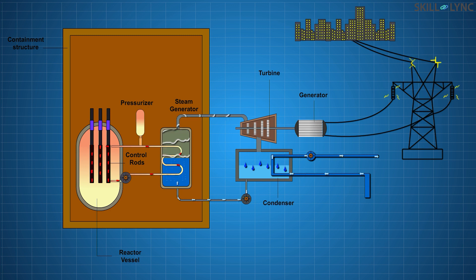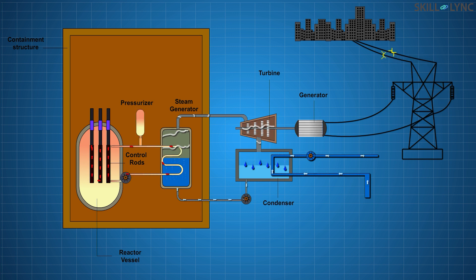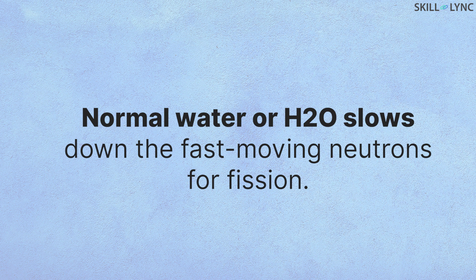As we have seen in earlier videos, boiling water and pressurized water reactors come under the category of light water reactors. This means these reactors use normal water as both coolant and a moderator. Although normal water is good for slowing down the fast-moving neutrons, it happens to have hydrogen.